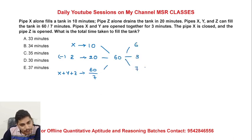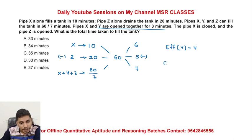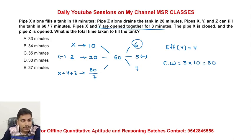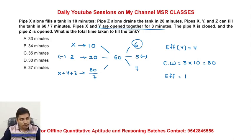Efficiencies: 6, 3, 7 — negative 3 efficiency for Z. 3 plus something gives the efficiency of Y as 4 units. In the first 3 minutes with pipes X and Y open, 10 units per minute by X and 30 units completed. Then X is closed, Z is opened. Z gives minus 3 units, Y gives plus 4 units, net plus 1 unit per minute.